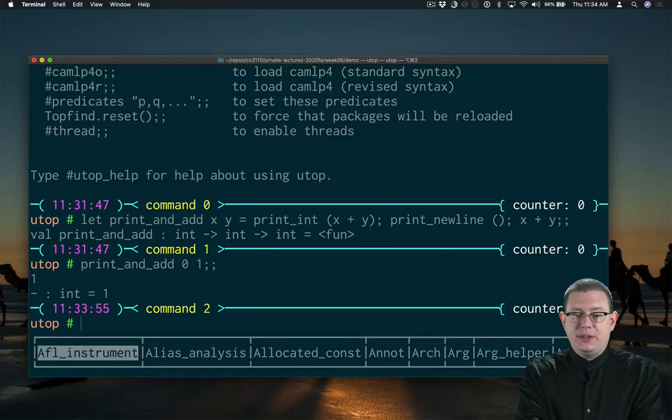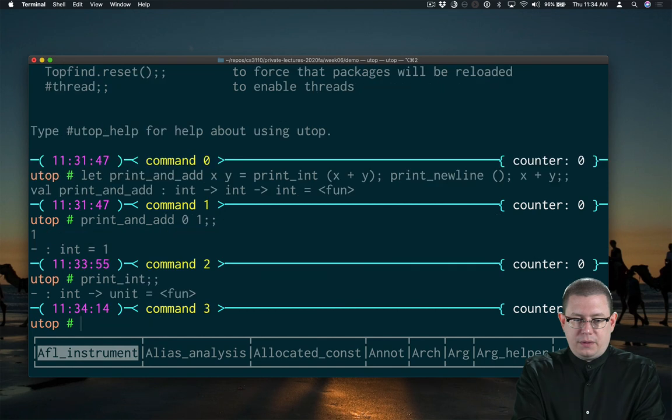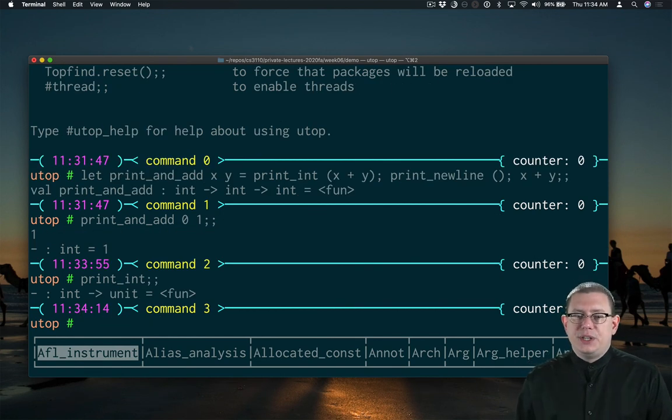So the type of print_int is int arrow unit. It takes in an int and gives you back a unit. That's why I'm able to successfully chain it together as part of that sequence of operations with semicolon.